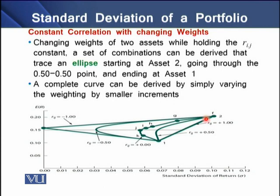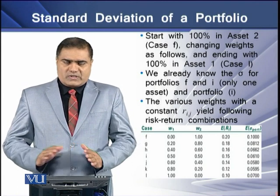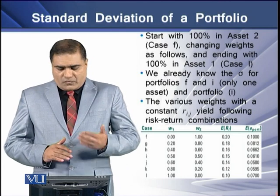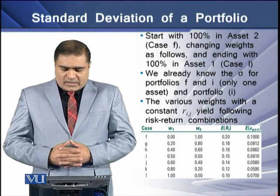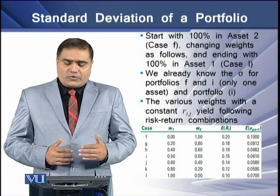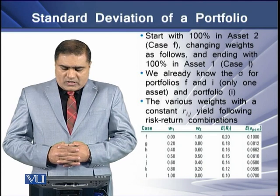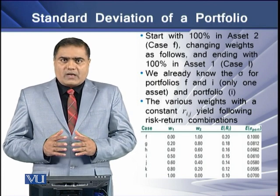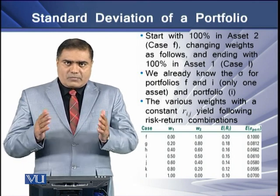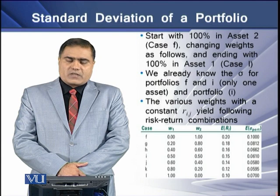The complete curve can be derived by simply varying the weights of individual assets in smaller increments — starting with 100% investment in asset two (case F), changing weights progressively, and ending with 100% investment in asset one (case L). We already know the standard deviations for portfolios F and L since each contains only one asset. The various pairs with constant correlation yield a risk-return relationship, and using the earlier data, we derive certain values for all cases.